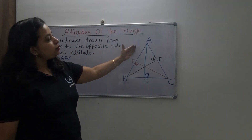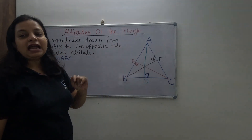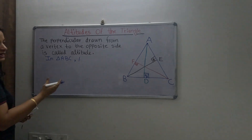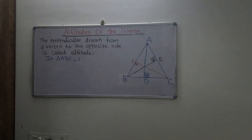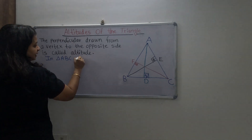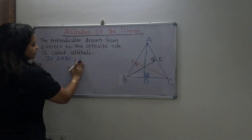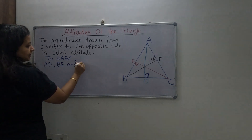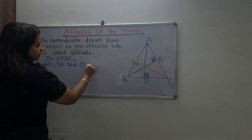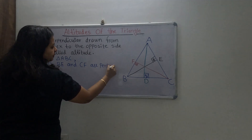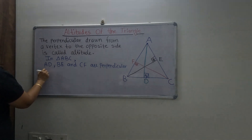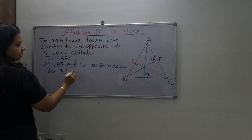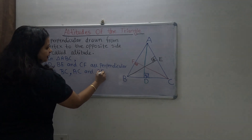An altitude of a triangle is the perpendicular line segment drawn from the vertex to the opposite side. The length BD and DC may be different — it doesn't matter; the condition is only that it must be perpendicular, meaning 90 degrees. In triangle ABC, AD, BE, and CF are perpendicular to sides BC, AC, and AB respectively.